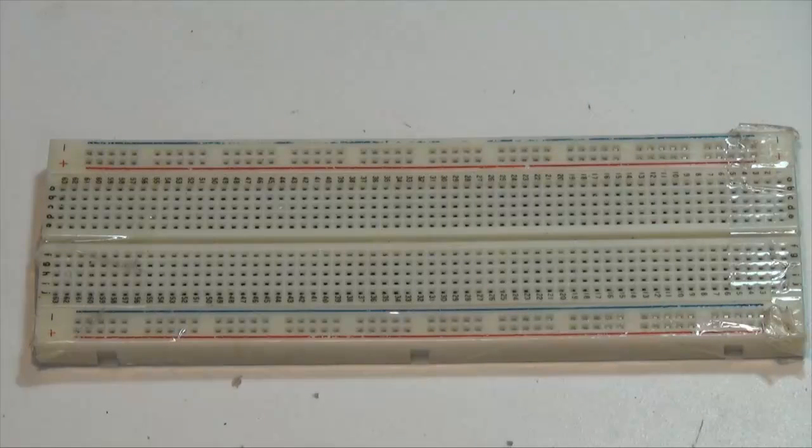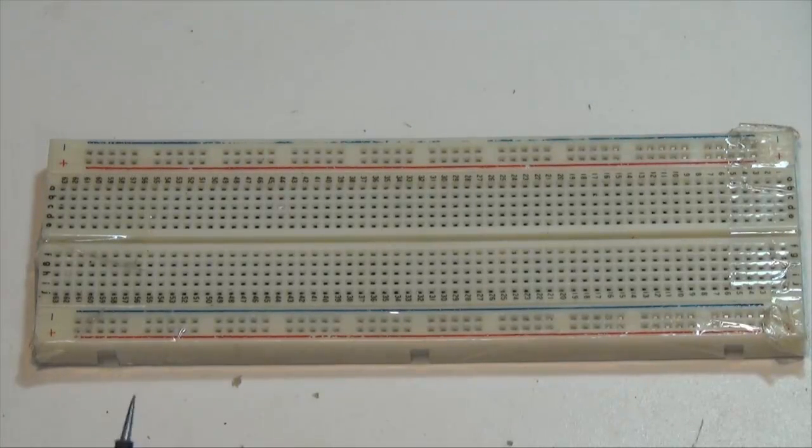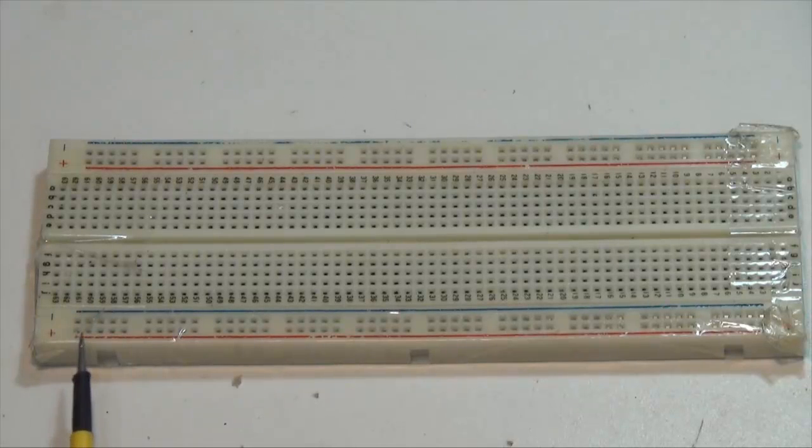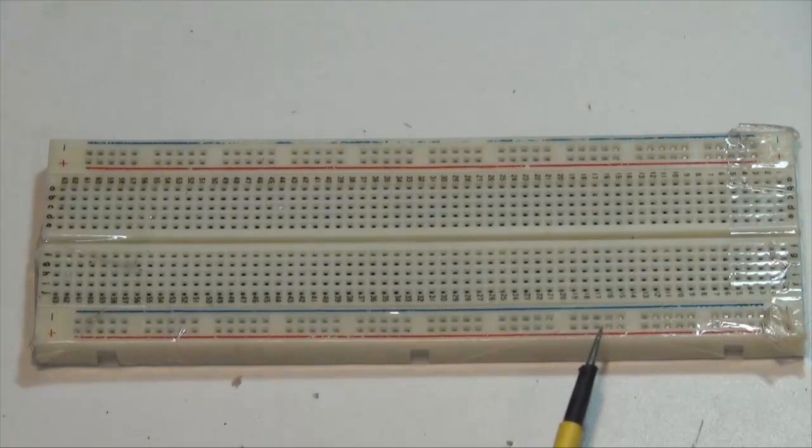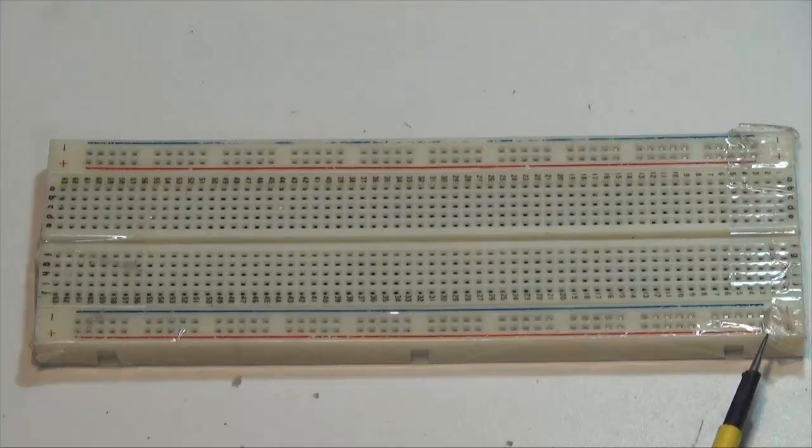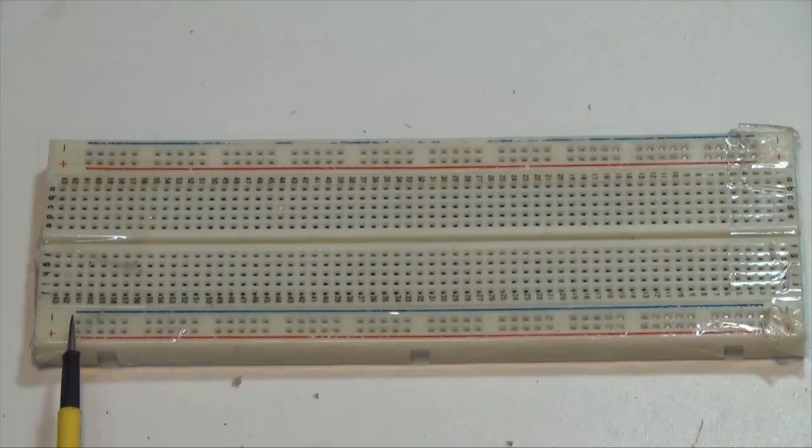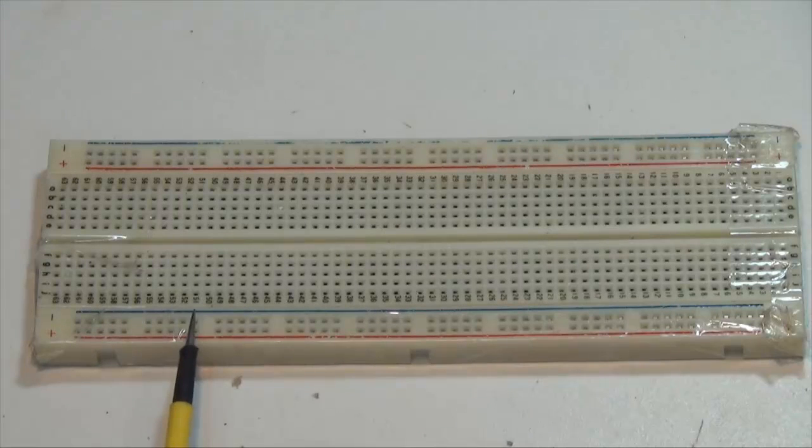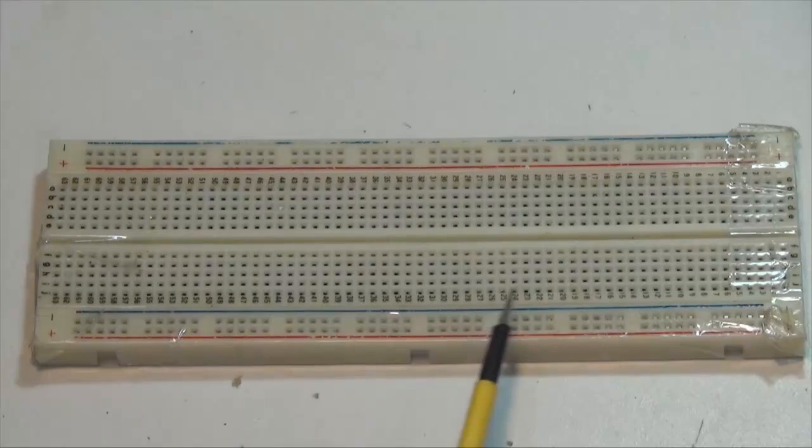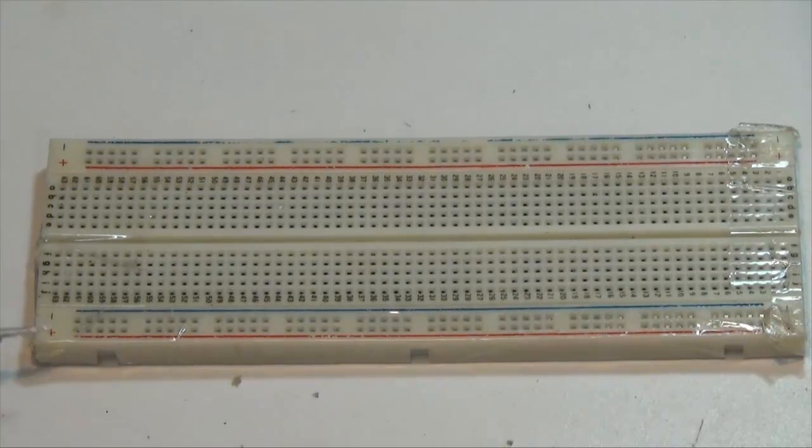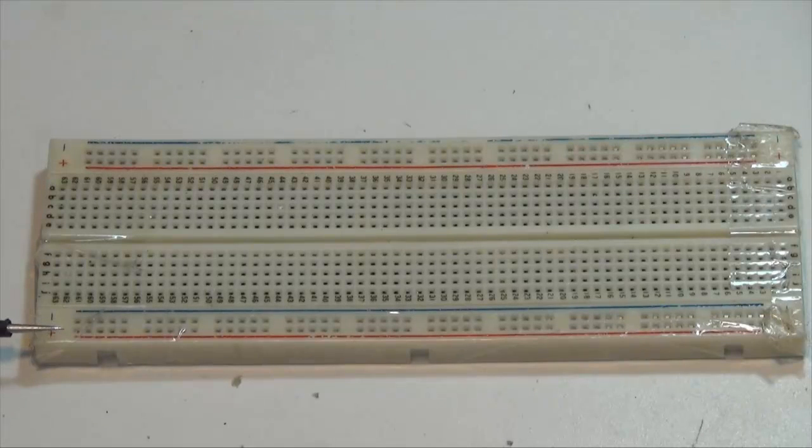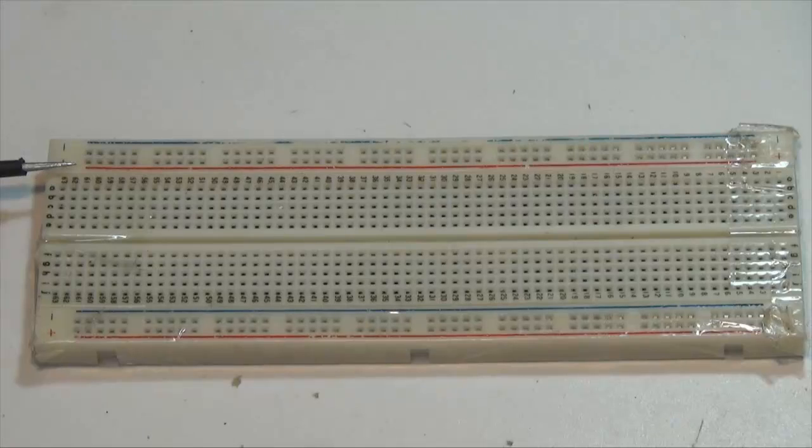This project board has some red and blue lines painted on it. These red and blue lines mean that all of these little square holes all the way across just above the red line are all connected together. The square holes just below the blue line are all connected together, but yet there is no connection between this row of square holes and this row of square holes.